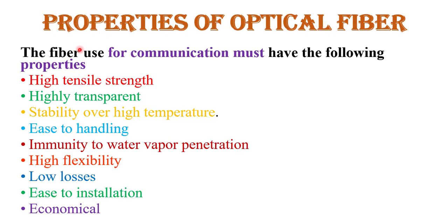Now the properties of optical fiber. Optical fiber used for communication must have the following properties: high tensile strength; highly transparent — if fiber is highly transparent, attenuation losses are low and it reflects more light; stability over high temperature; easy to handle; immunity to water vapor penetration; highly flexible — because if any force is applied across the optical fiber, a flexible fiber will not break easily; low losses — if fiber has low losses, it propagates light over long distances; easy to install; and economical. These are the properties of optical fiber used in optical fiber communication.